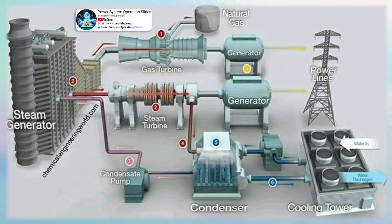Air-breathing jet engines, or gas turbines optimized to produce thrust from exhaust gases or from duct fans connected to the gas turbines. Jet engines that produce thrust from the direct impulse of exhaust gases are often called turbojets, whereas those that generate thrust with the addition of a duct fan are often called turbofans or fan jets.